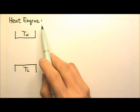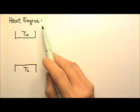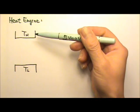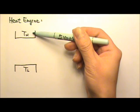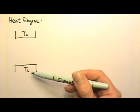A heat engine is an engine that turns heat into mechanical work. It operates between two temperatures, a high temperature TH and a low temperature TL.